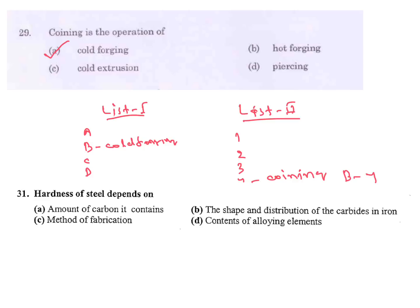Next question: Hardness of steel depends on a) Amount of carbon it contains, b) The shape and distribution of carbides in iron, c) Method of fabrication, d) Contents of alloying elements. Its answer is B.